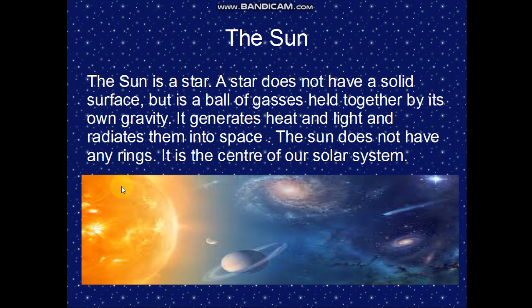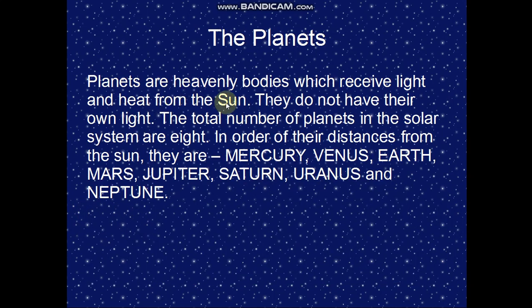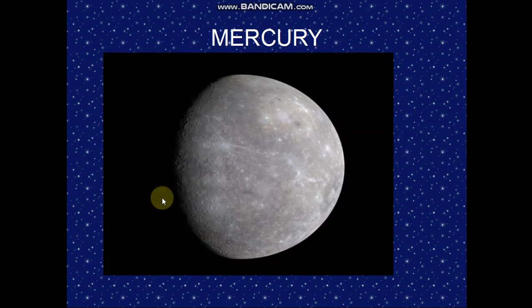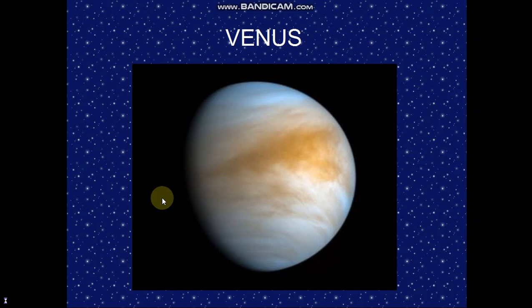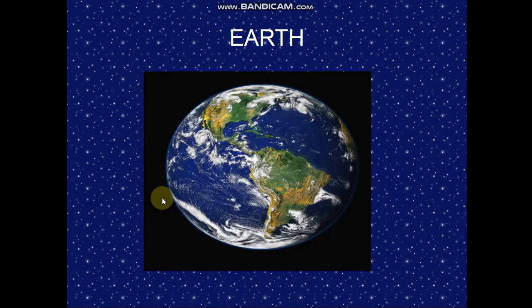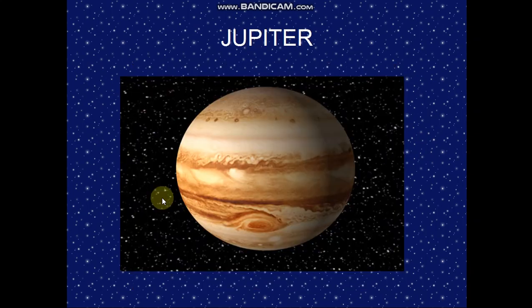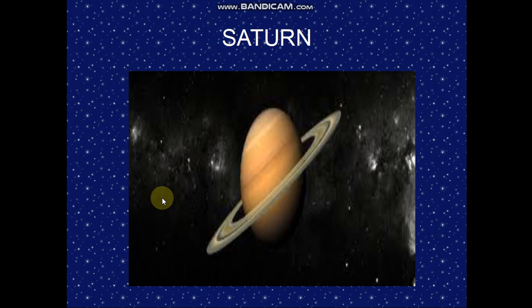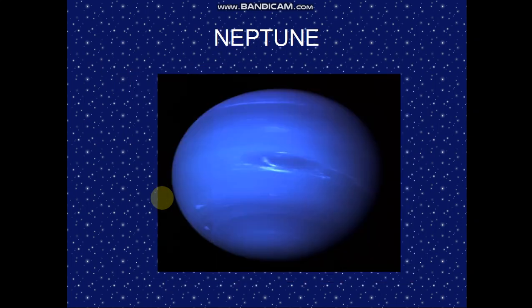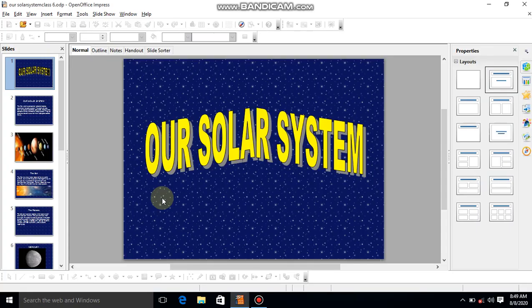Then about the Sun, I have written something and inserted the picture of the Sun. Next, about planets — I have written all the planet names. Then one by one I have entered the names. You have to enter the details about these planets also. I have just inserted the pictures.